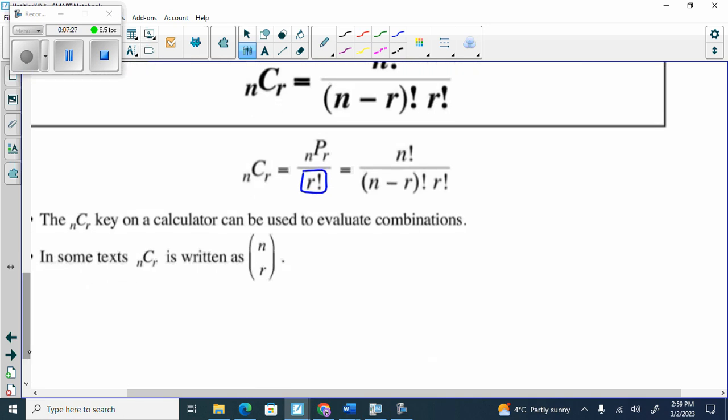The nCr key on a calculator can be used to evaluate combinations. The other thing is, and it's written on your formula sheet, it says nCr equals nC(n-r). So if I said 9C3, that was my answer to the last one, I could have wrote it like this.